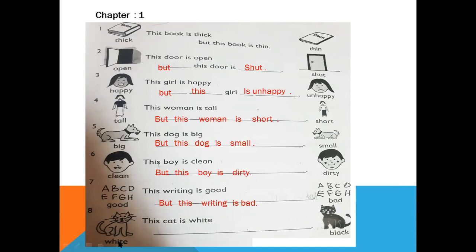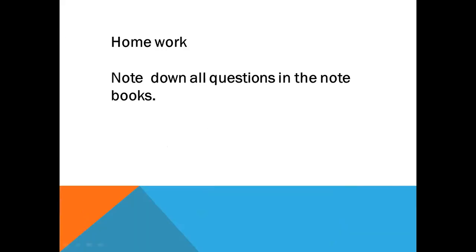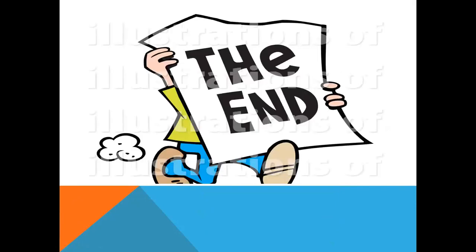The last one: this cat is white and this one is black — two different colors, white and black. So we will use 'but.' 'This cat is white but this cat is black.' Open your books and pause the screen, look at this and fill in your book. For the short task, note down all six questions we read today in your notebook. Thank you for joining me, and inshallah we'll see you soon in the next lesson.